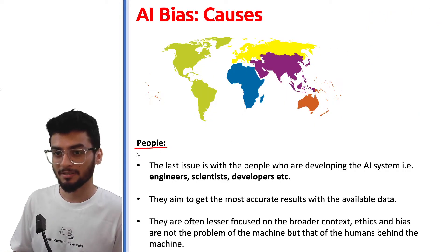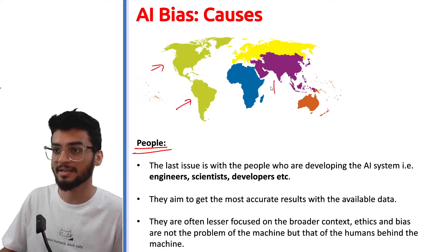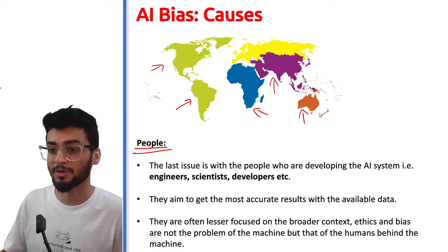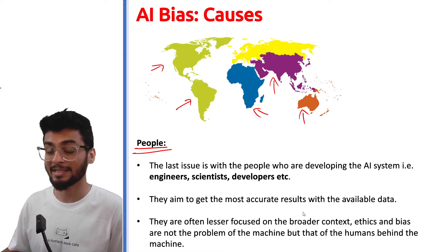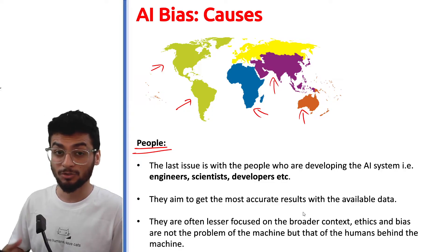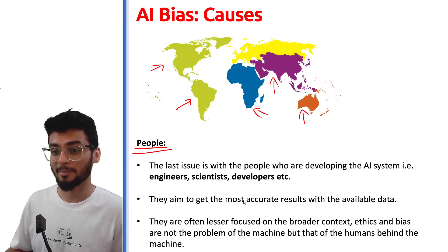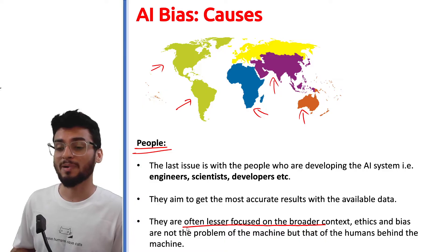Another cause can be the people — where the people belong to, which continent or country they come from. This plays an important role because engineers and scientists always need accurate results and they do not care if the AI is biased or not — they just want the best accuracy for the system. And in that process, they introduce a lot of bias into the system. It is often rightly said that AI is not biased because of AI itself — whatever bias exists in AI, directly or indirectly, that bias comes from humans.